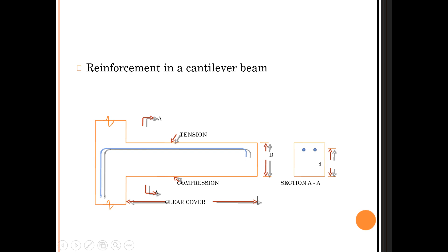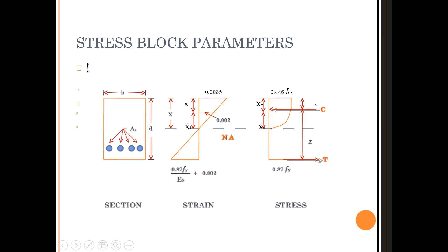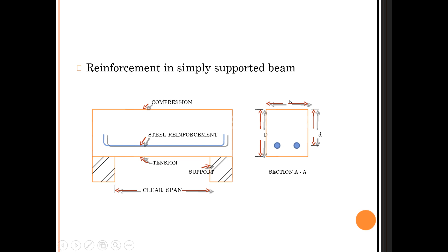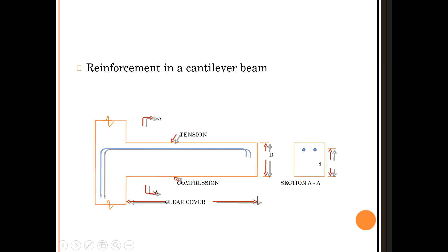In a cantilever beam, the behavior is opposite to a simply supported beam. When a load is applied, the deflected shape causes the top fiber to be in tension. Therefore, in a cantilever beam we provide the tensile reinforcement in the top fiber — that becomes the tension zone — while the bottom fiber is under compression, making the bottom the compression zone.